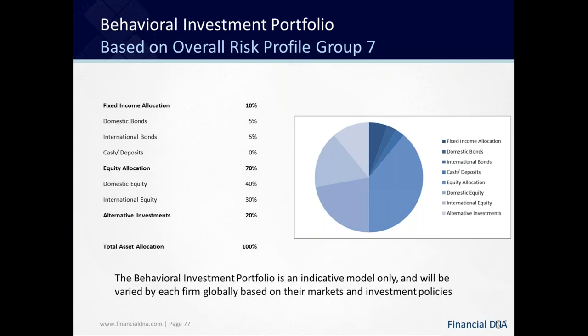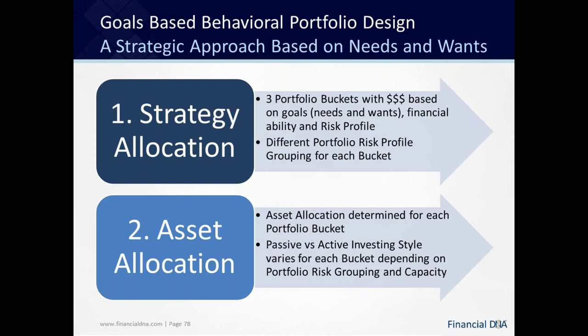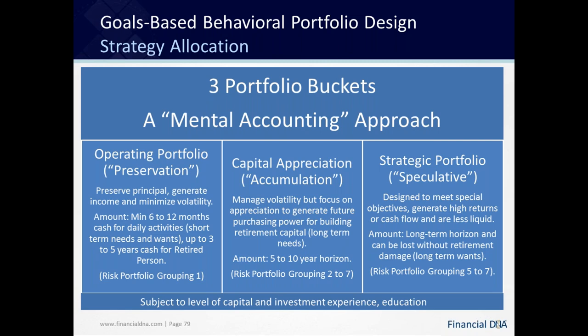How do we go about building the portfolio? The strategic approach is that there would be three portfolio buckets, with dollars allocated to each based on the client's goals, needs and wants, financial ability, and risk profile. A different portfolio risk profile can be allocated to each bucket if required to make the portfolio more customised. The asset allocation is then determined for each bucket, along with how the money will be managed in terms of passive versus active.